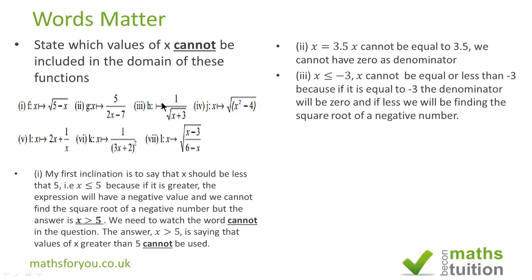For subsection 3, x cannot be less than or equal to minus 3. Let's take equal to minus 3: if x is equal to minus 3, minus 3 plus 3 will give me 0 and we cannot have 0 as the denominator. Let's take x less than minus 3: if x is minus 4, minus 4 plus 3 will give me minus 1 and we cannot find the square root of a negative number. So the actual answer should be x cannot be less than or equal to minus 3 because of the word 'cannot'.